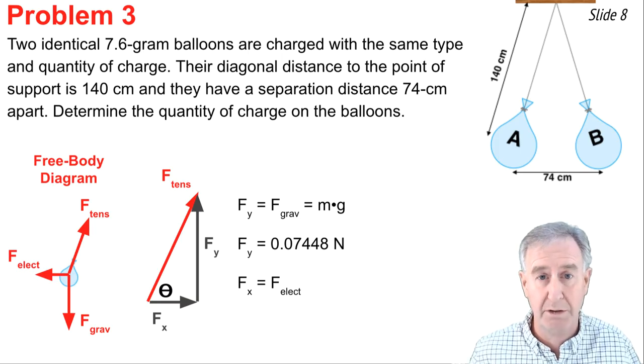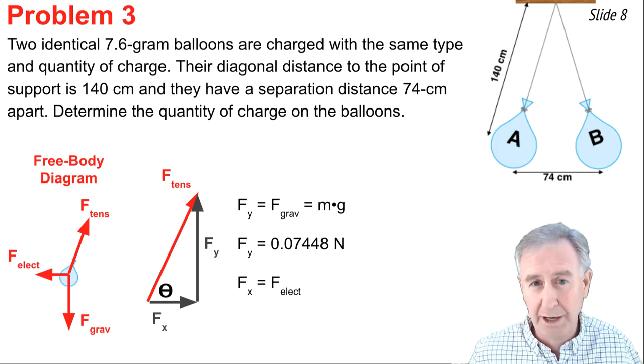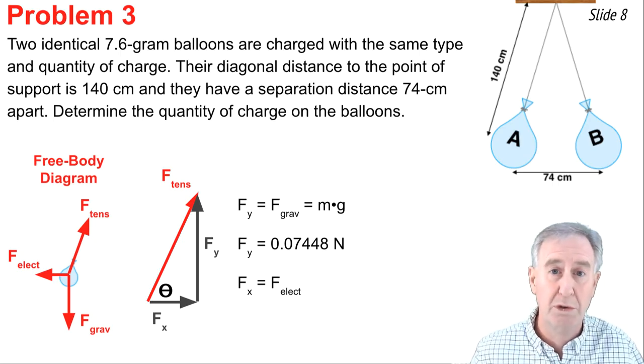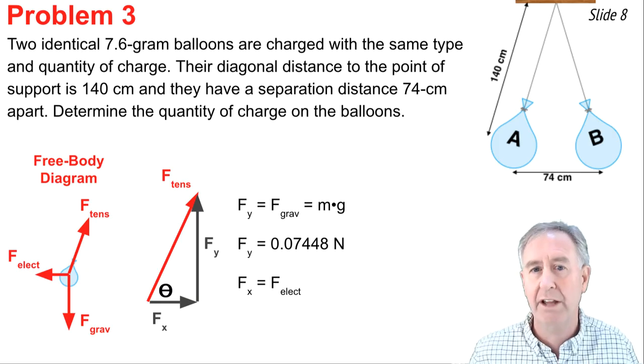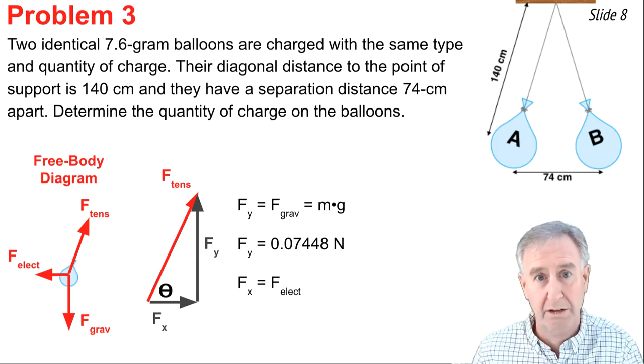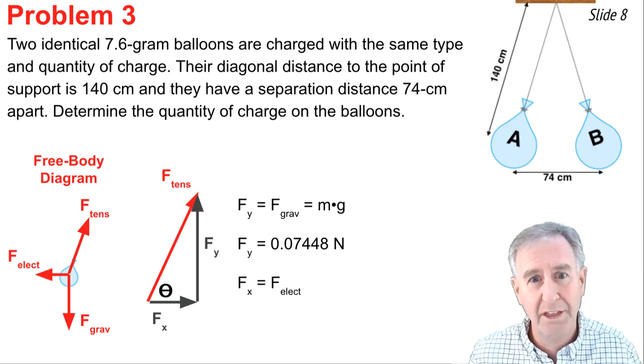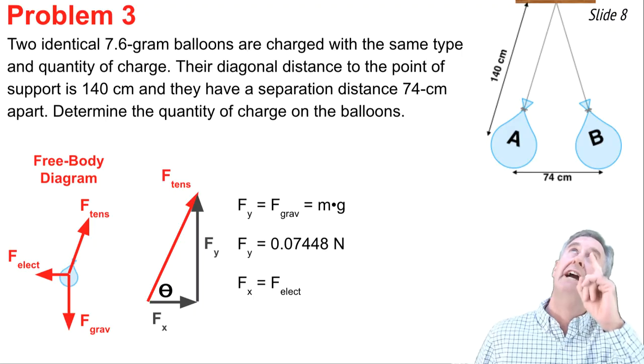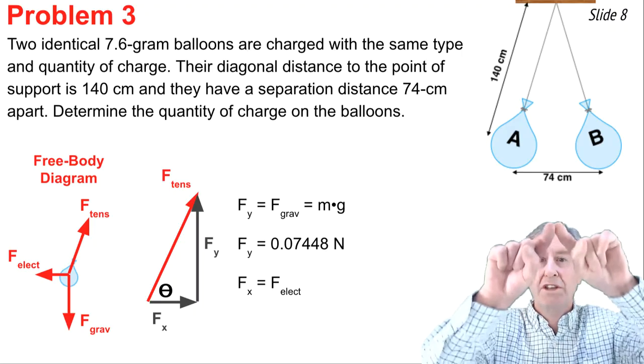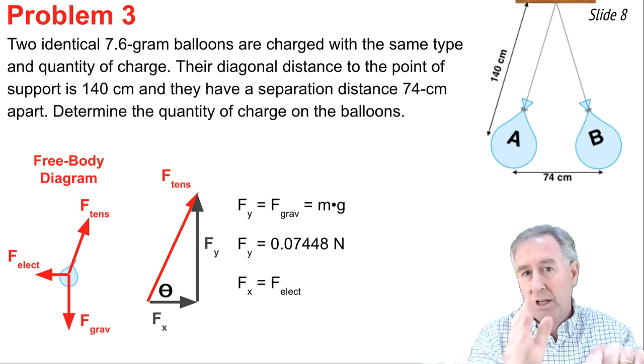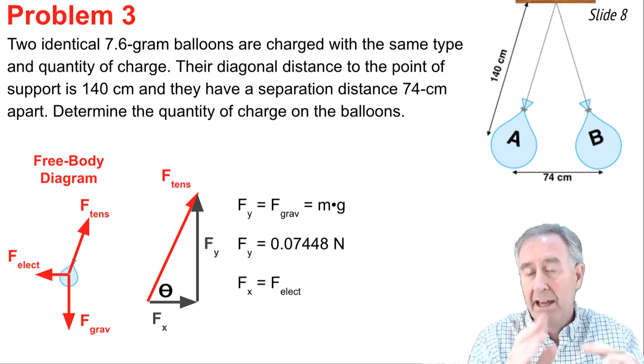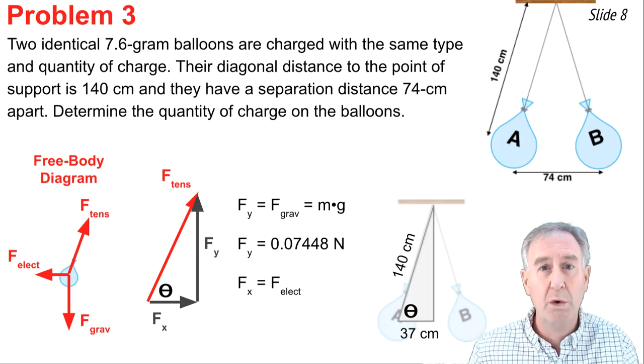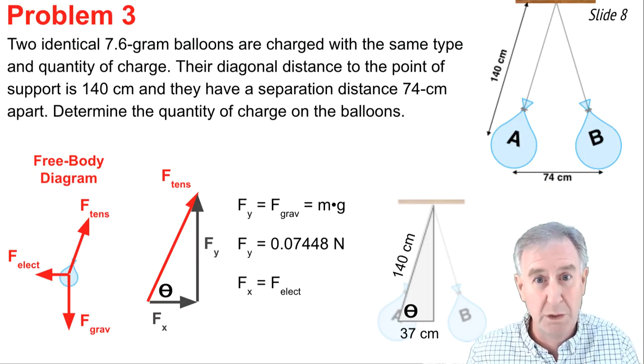Now this triangle is the crux of the entire problem. Because if somehow I can calculate F electrical, I can find the value of Q using Coulomb's Law. So I have to be able to get F electrical out of this triangle. And to do so, you need to know the angle theta that's shown there. So how are you going to get theta? And the trick is to look at this diagram above. And notice that the strings make one big triangle. And if I cut the triangle in half, I have a right triangle. And I've done that here. You see it drawn. And I know that the horizontal side of that right triangle is half of the 74 cm. 37 cm. And I know the hypotenuse side.